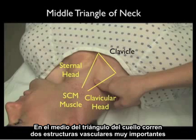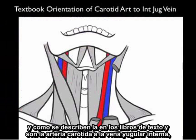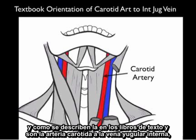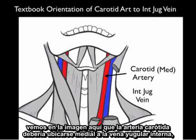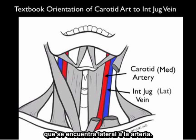We see here that the clavicle forms the inferior boundary of the middle triangle of the neck. Within the middle triangle run two very important vascular structures, and as per the textbook orientation of the carotid artery to the internal jugular vein, the carotid artery should run medial to the internal jugular vein, which lies lateral to the artery.